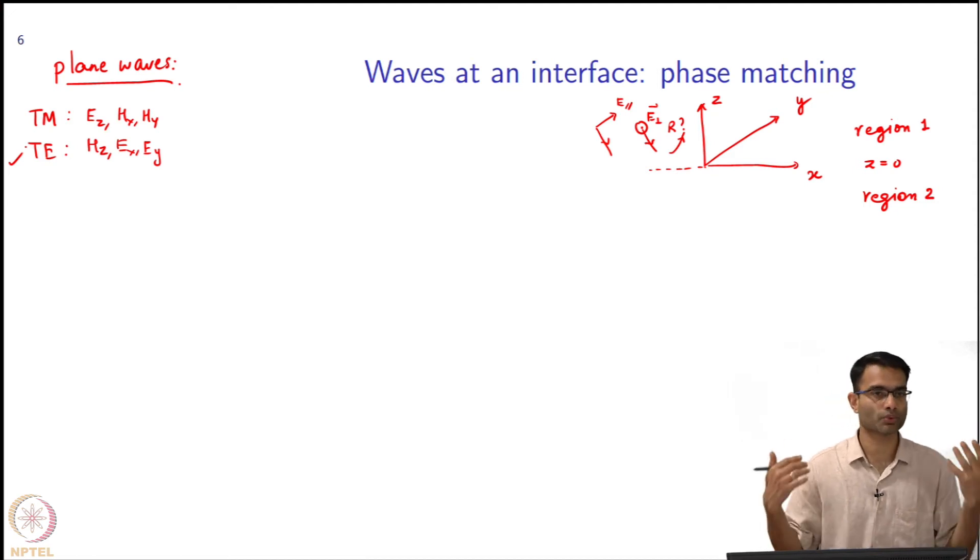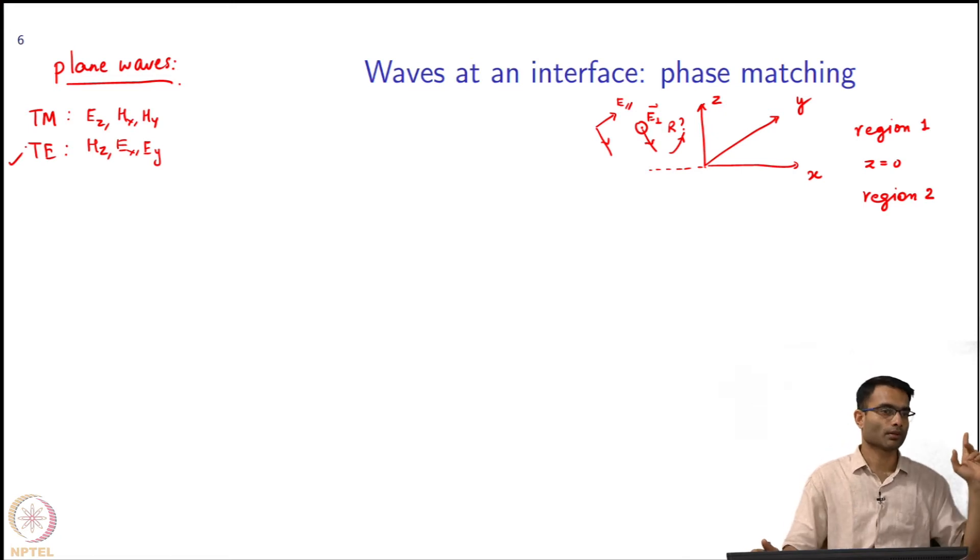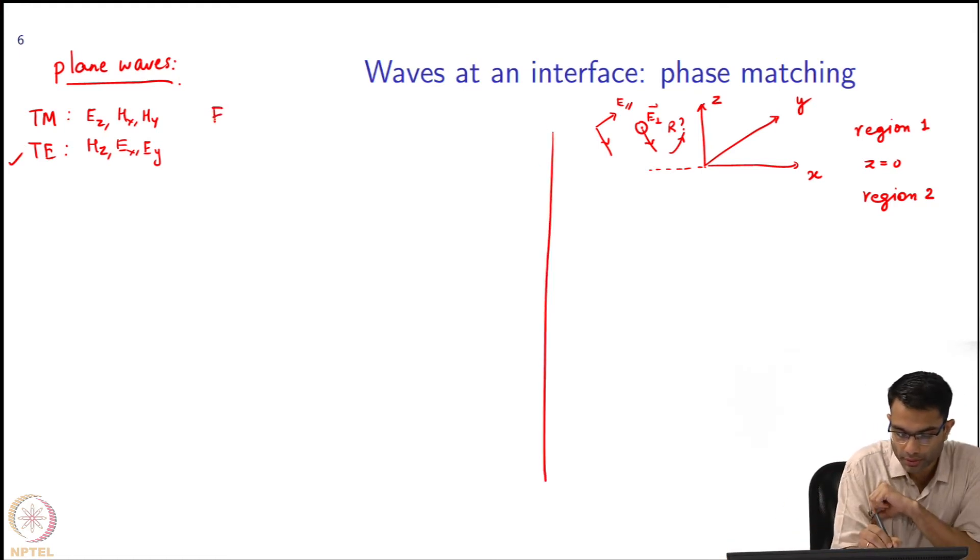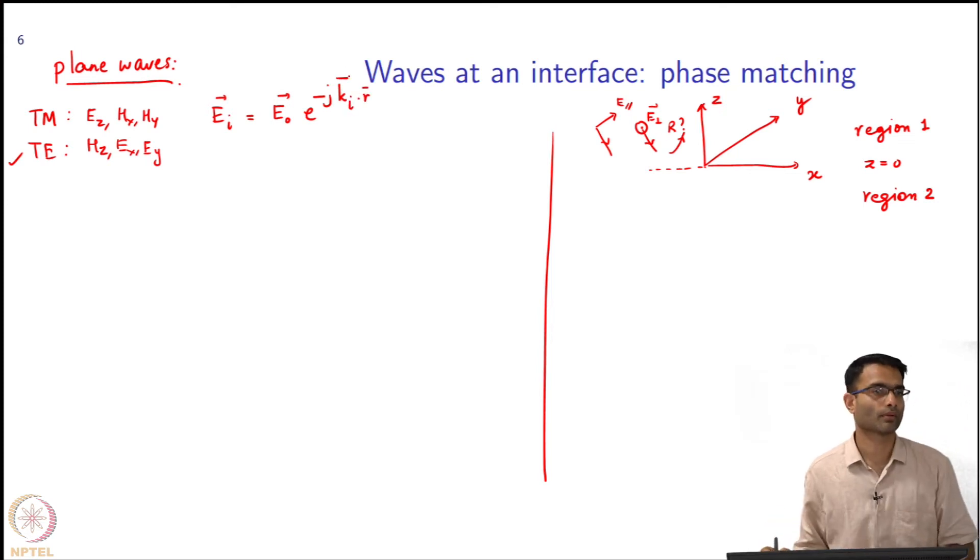Plane waves in two regions - I'll start with the plane wave incident from region 1. What kind of waves do I expect? A reflected wave and transmitted wave. E incident is some vector E naught times e to the minus j ki dot r. E naught in this case is going to be a vector in the x-y plane because it is Ex, Ey.